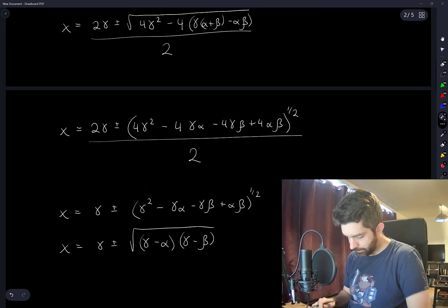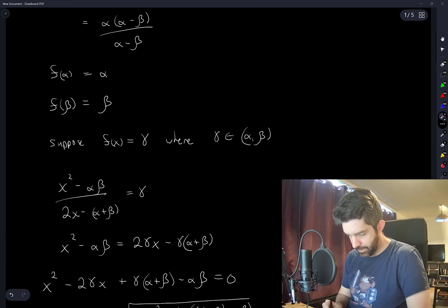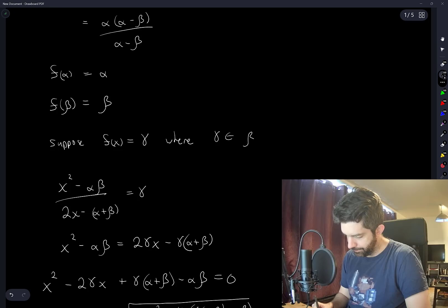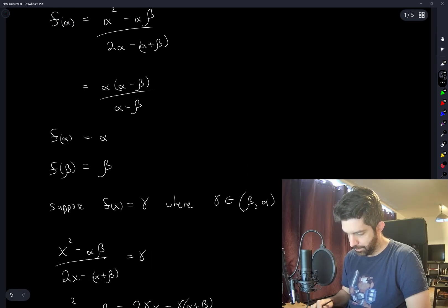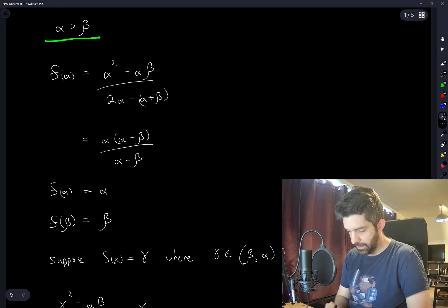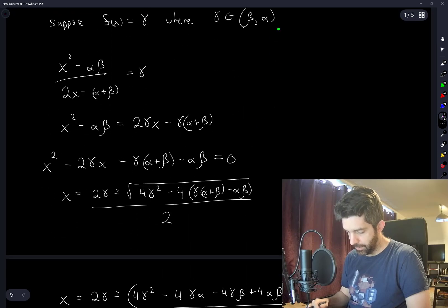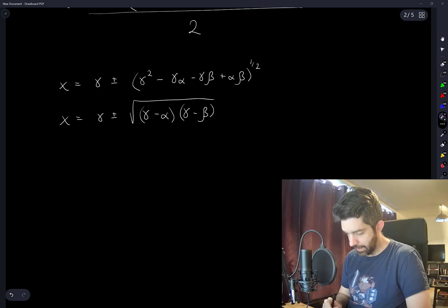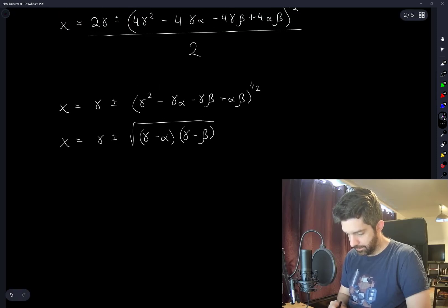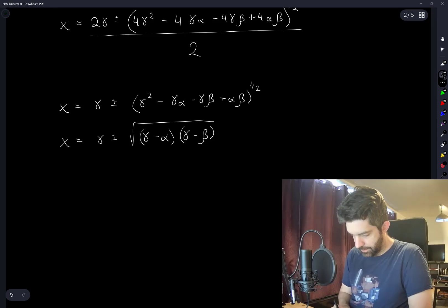So I've said that gamma is in between alpha and beta. I guess, in fact, I have this backwards. Because I've said that alpha is greater than beta. So alpha is greater than beta. Gamma is in the interval from beta to alpha. And then when I solve for x, I see that, well, alpha is greater than beta. And gamma is in between. So this is actually negative. Alpha is greater than gamma, so that's negative.